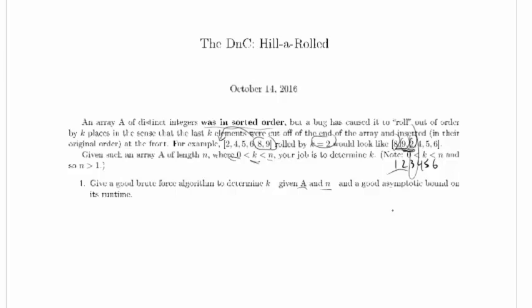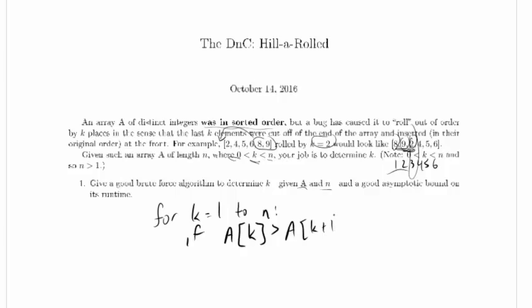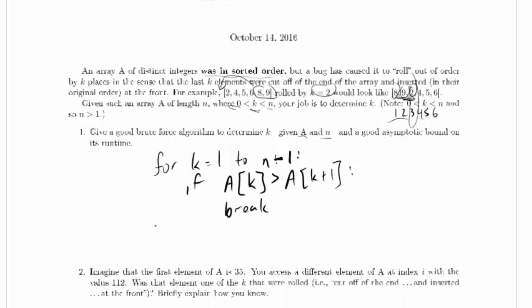That seems pretty good for brute force. We're basically exploring every possibility for k. So we can say something like: for k equals 1 to n-1, if a[k] is greater than a[k+1], then break, and return k.